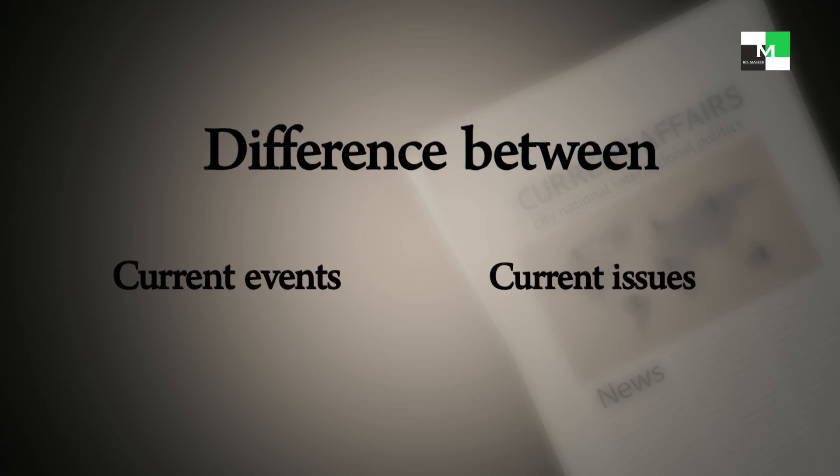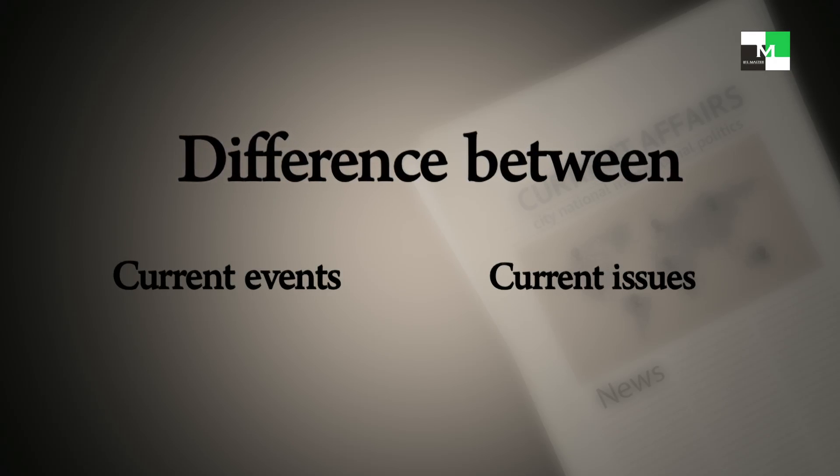When we are talking about current events and current affairs, they make a different logic. Current events are more about the information, the news that we have every day - events are happening and being reported. Whereas when we talk about current affairs and current issues, current issues give a different perspective. It talks about a long-term issue which has been existent.